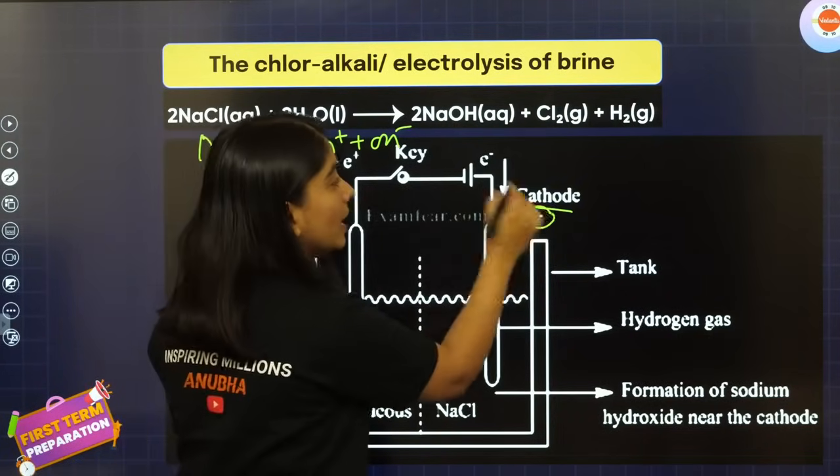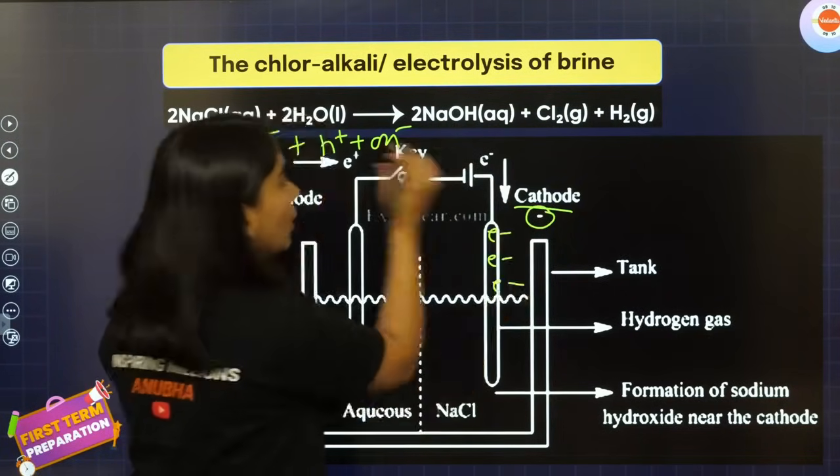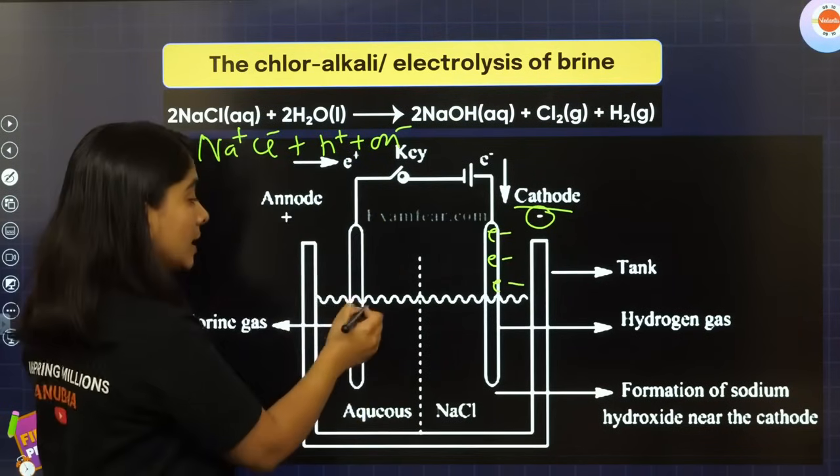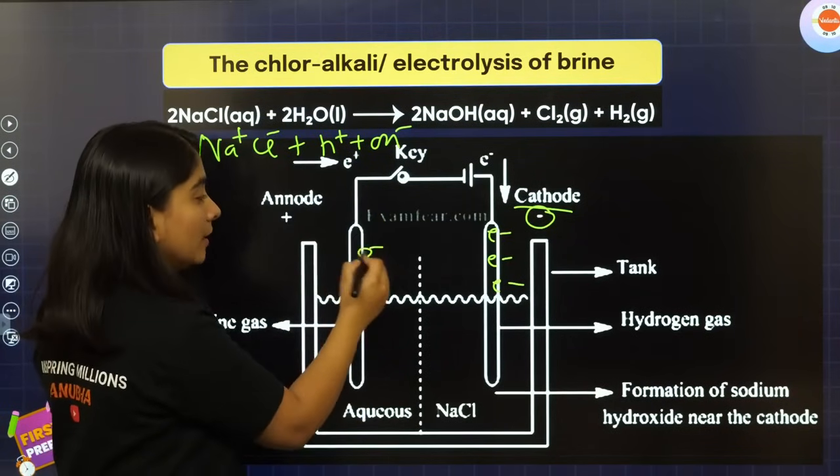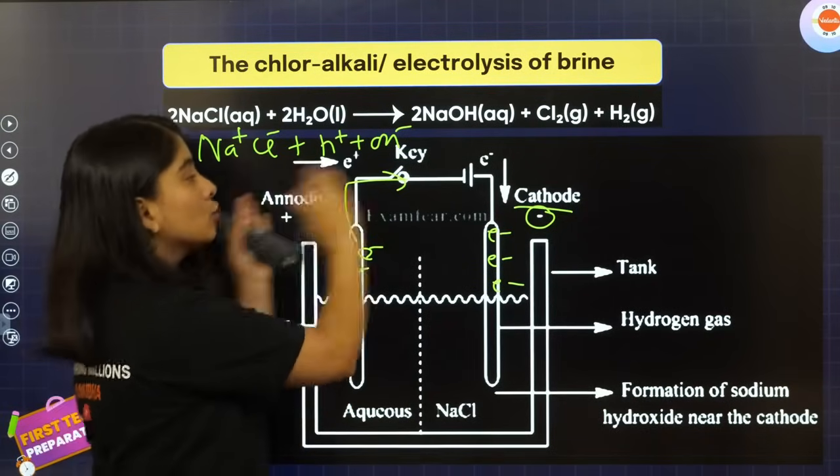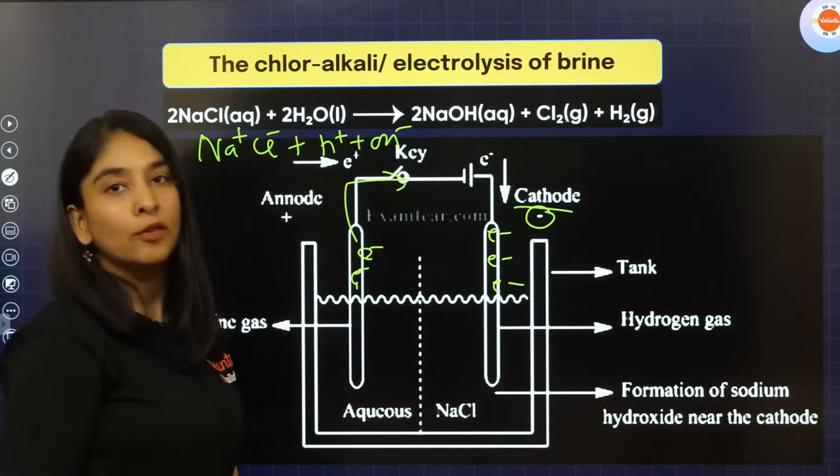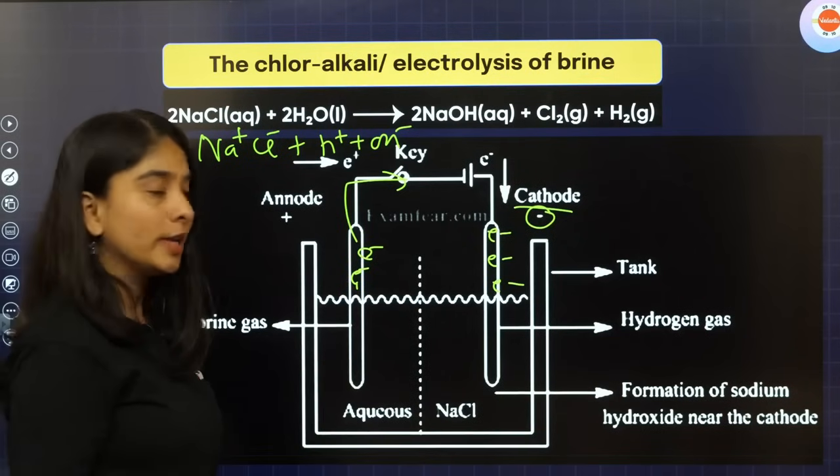But on the cathode, there is negative charge. The battery is sending electrons on this side. On the other hand, anode is positive charge. What does anode do? Those electrons, they are feeding the battery. They are sending the negative charge to the battery. That's why it is anode, because it carries positive charge.